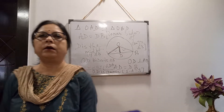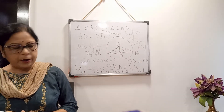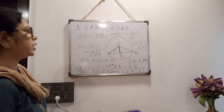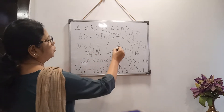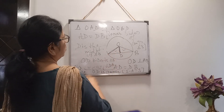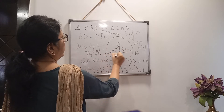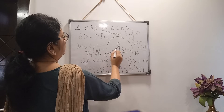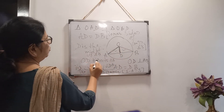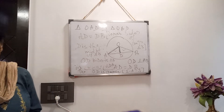Again, the statement: the perpendicular drawn to a chord which is not a diameter — here OD is the perpendicular drawn to chord AB, and AB is not a diameter — bisects the chord. So we have proved here that OD bisects AB. Very easy.